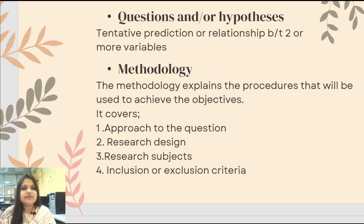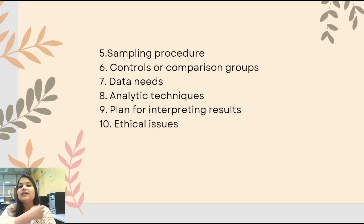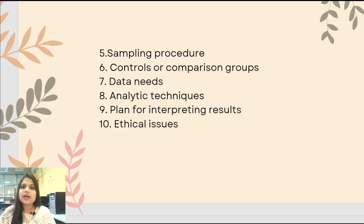Then we come to the method section, in which we approach the research question and describe the research design. This includes the subjects or participants — how many males, how many females, what is the inclusion criteria, what is the exclusion criteria, and what is the sampling procedure. If using probability sampling, specify whether it is stratified, cluster, random, systematic, or simple sampling. If using non-probability sampling, specify whether it is convenience, purposive, snowball, or quota sampling.